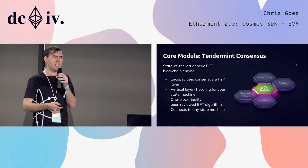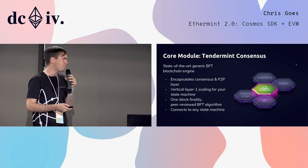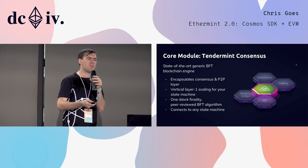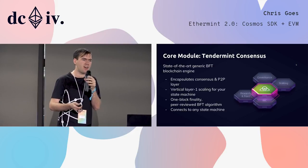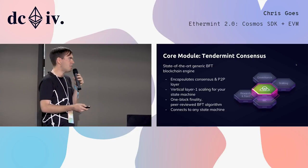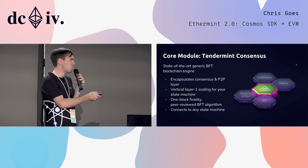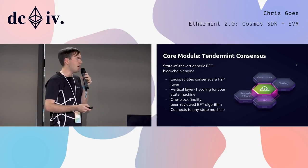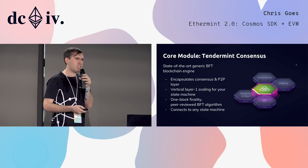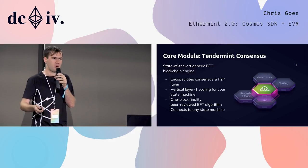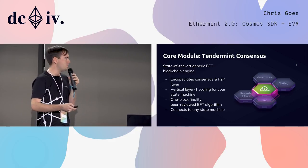As soon as a block is confirmed, it will never be reverted. Most importantly, for this model of application-specific blockchains, Tendermint is generic. It can connect to any state machine. You could write, using the Cosmos SDK or using a different SDK, any kind of state machine you like, operating whatever sort of application you want to operate, and run it with Tendermint.